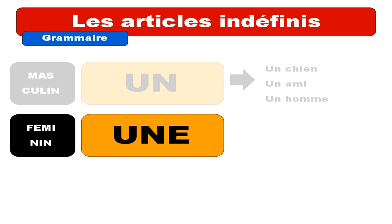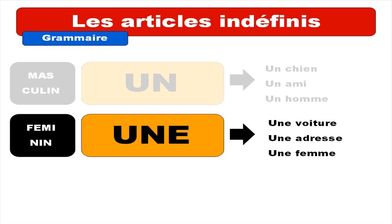Feminine form, it's 'une'. For example: 'une voiture'. And then 'une adresse' — it's a little bit the same thing, there is no real break between the two words, like if it was only one word: 'une adresse'.